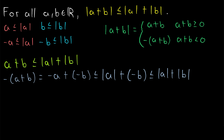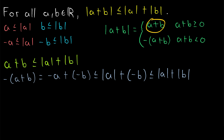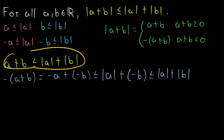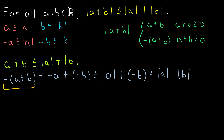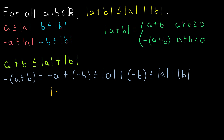Now what's the significance of what we just showed? Well, we began by pointing out by the definition of absolute value that the absolute value of a plus b is going to have to be equal to a plus b or negative a plus b. And we just showed that a plus b is less than or equal to that sum, and negative a plus b is less than or equal to that sum. Thus, we know for sure that the absolute value of a plus b will be less than or equal to the absolute value of a plus the absolute value of b. And that completes the proof.